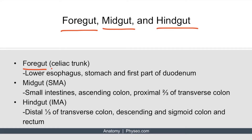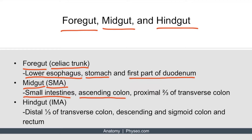The foregut is supplied by the celiac trunk, and these foregut structures include the lower esophagus, the stomach, and the first part of the duodenum. The second portion, the midgut, is supplied by the superior mesenteric artery, and these midgut structures include the small intestines, the ascending colon, and the proximal two-thirds of the transverse colon.